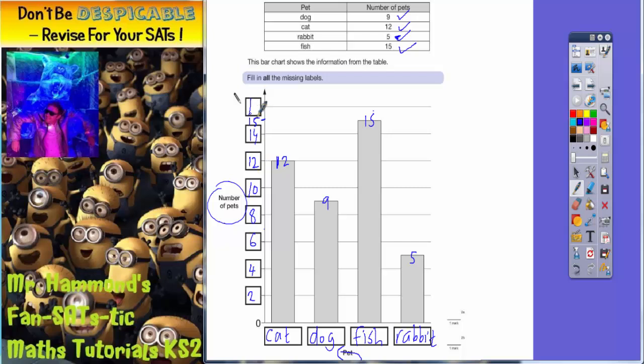Now as you can see, twelve is already there, then it'd be fourteen, then it'd be sixteen, and you can see that still fits in because fifteen would be between fourteen and sixteen. So there we have it. Along the bottom we should have cat, dog, fish, and rabbit. Then up the side we need to go up in twos.